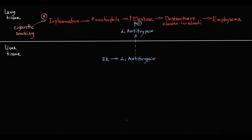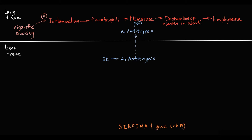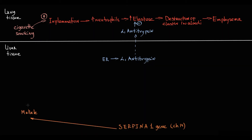Alpha-1-antitrypsin is encoded by the SERPINA1 gene, located on the long arm of chromosome 14. The normal version of that gene is called the M allele, and the M allele results in normal production of alpha-1-antitrypsin protein.